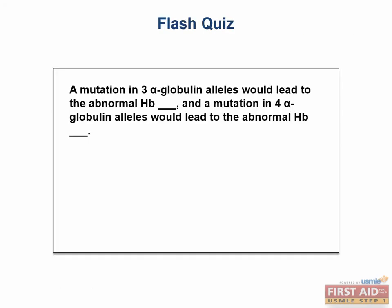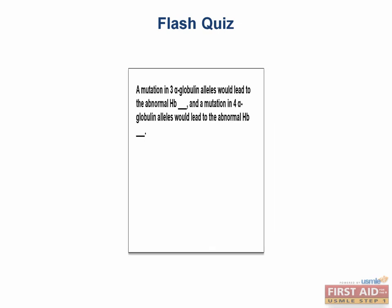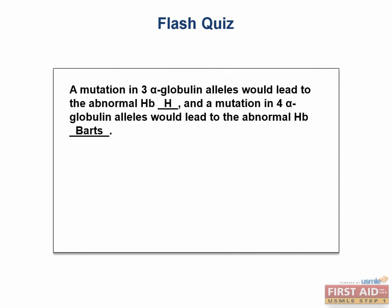To review: a mutation in three alpha-globin alleles leads to the abnormal hemoglobin H and hemoglobin H disease. A mutation in four alpha-globin alleles leads to the abnormal hemoglobin BARTs and hydrops fetalis.